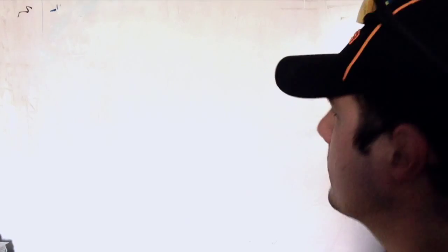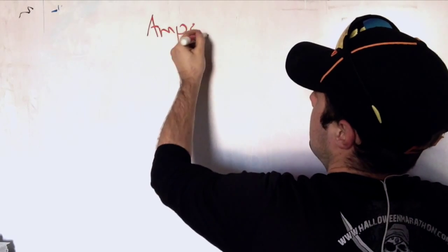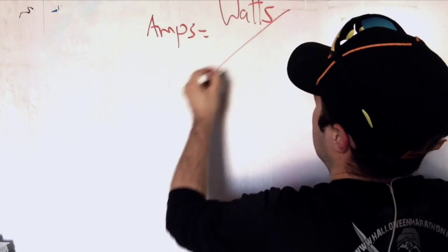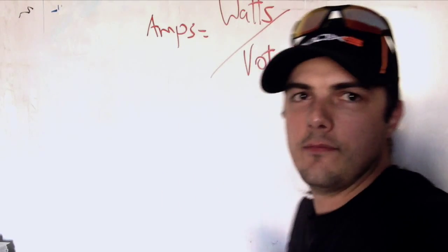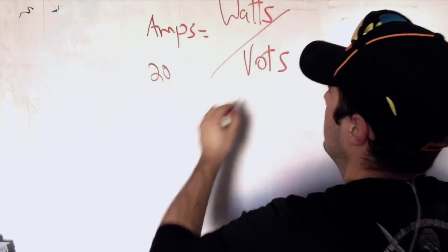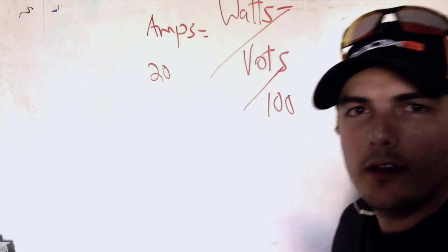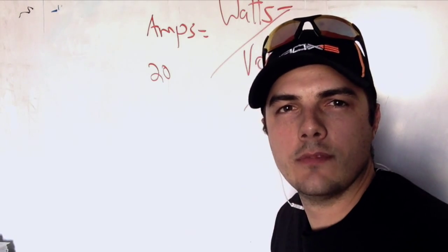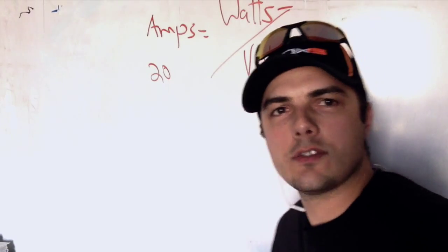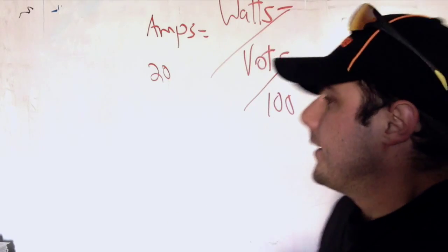I hope I haven't been too confusing. Let's just recap. The equation of course is amps equals watts divided by volts. Amps, just think 20 amp circuit. Watts, whatever the lamp is rated at. Volts, use 100 volts and you'll be awesome. So there you go. Any other questions, thoughts, comments, I'd love to hear back from you guys. I'm sure we'll have some good discussion on this one. Have a good day.